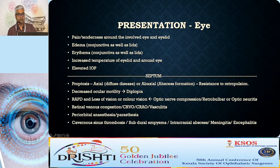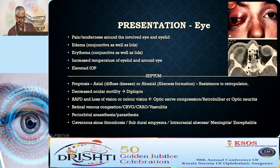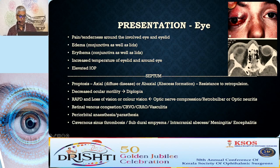Orbital cellulitis is the second stage of Chandler's staging. It may begin as preseptal cellulitis and, as infection crosses the septum into the orbit, there will be axial proptosis in diffuse disease and abaxial in abscess formation, resistance to retropulsion, decreased ocular motility causing diplopia, optic nerve compression or optic neuritis causing loss of vision and loss of color vision with RAPD. There may also be retinal venous congestion, CRVO, CRAO, or vasculitis, periorbital anesthesia or paresthesia, and then cavernous sinus thrombosis or subdural empyema and beyond into the brain.